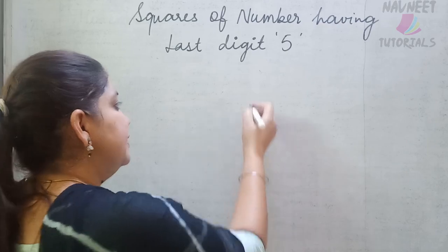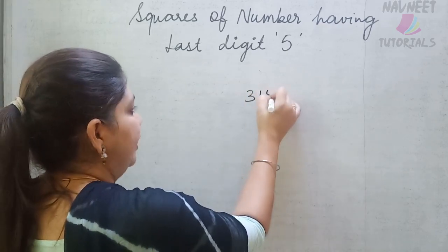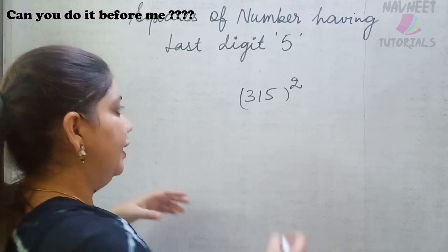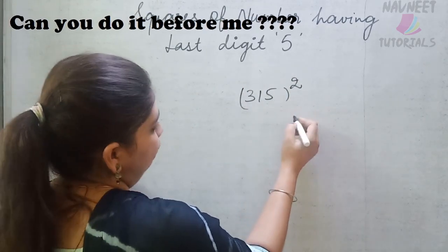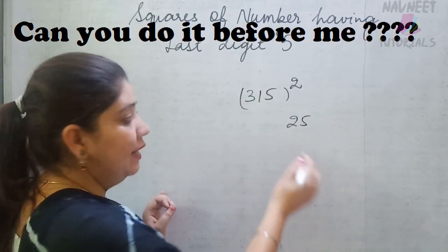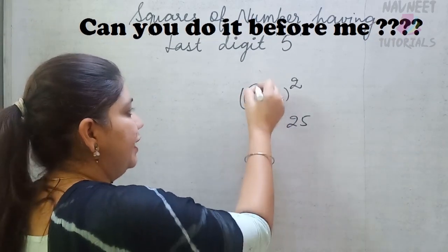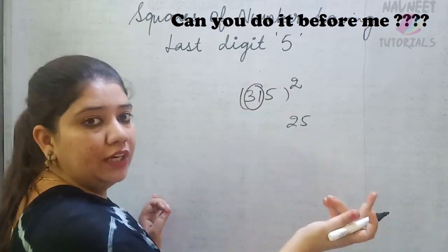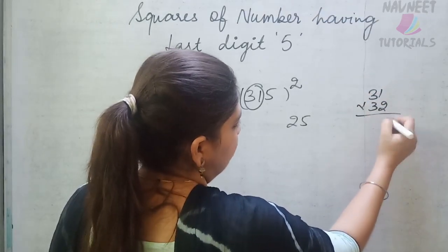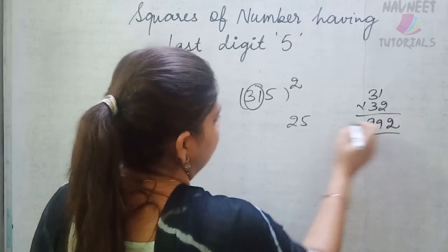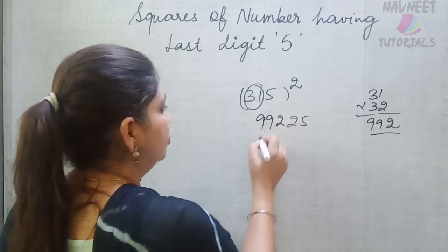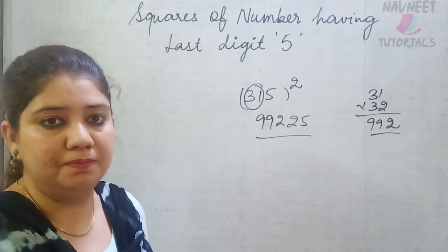Consider 315 squared. Again, 5 squared gives 25. The remaining part is 31, and the next number is 32. So 31 times 32 is 992. Write that at the front and we get 99225 as the answer.